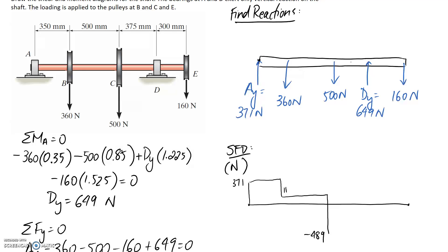So it's going to be 11 where we're at minus 500, which takes us to negative 489. Again there's nothing happening through this section so we stay stable, and then we have to go up 649. So negative 489 plus 649 takes us up to 160.